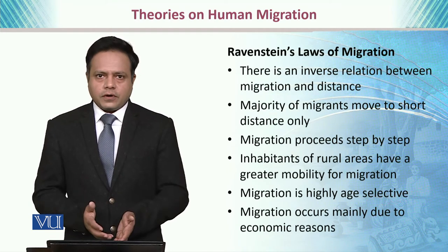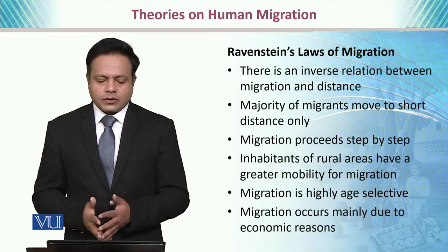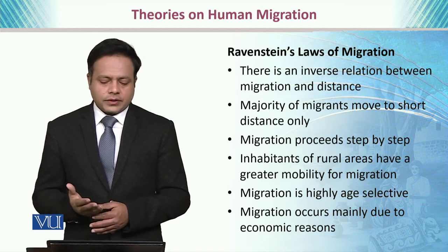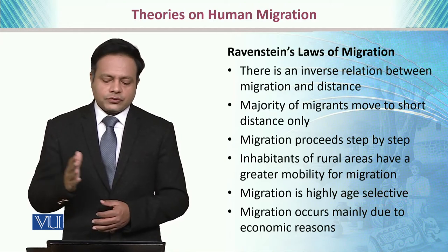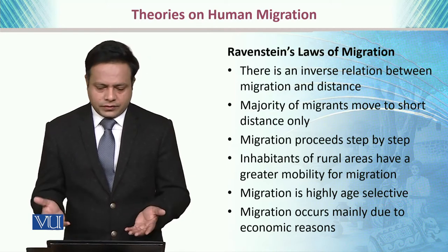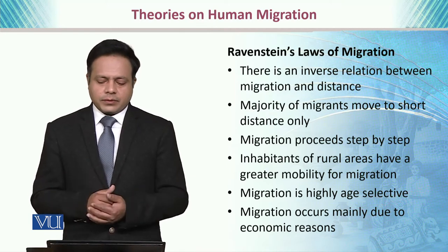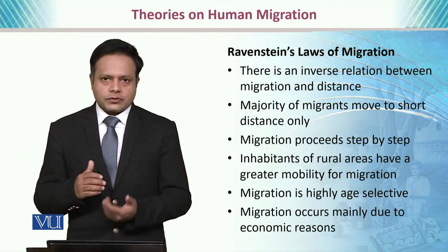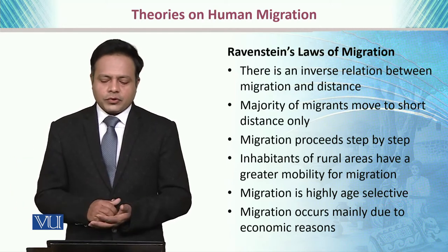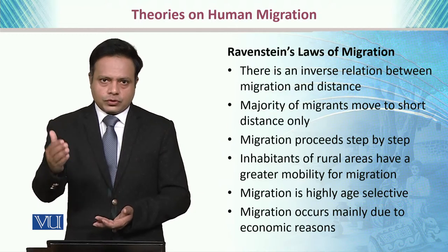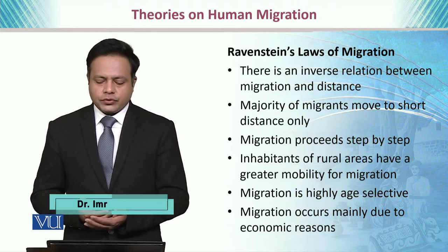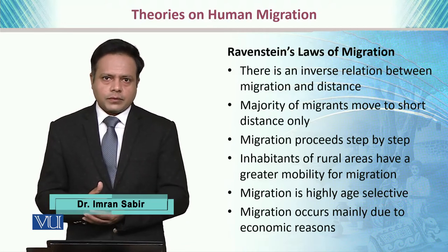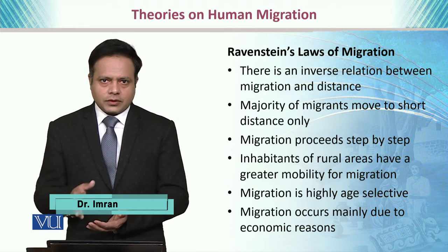First of all, let's talk about Ravenstein's laws of migration. Interestingly, there is an inverse relationship between migration and distance. For example, the longer the distance, the lower the chances of migration. The majority of migrants move only shorter distances, and migration proceeds step by step — it is not usually performed in one go.